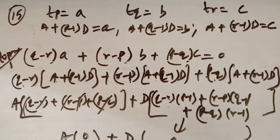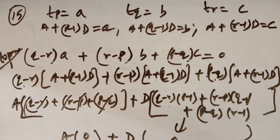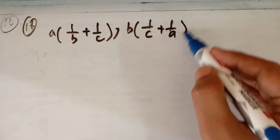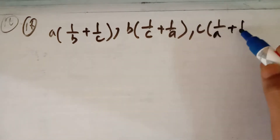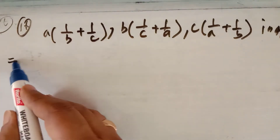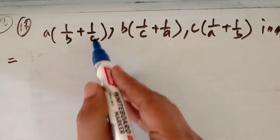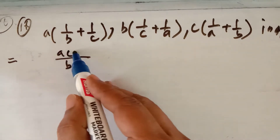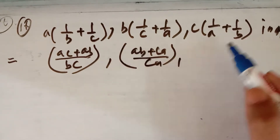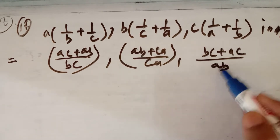Now in question number 16, some terms are given in AP and you have to prove that a, b, c are in AP. It is given that a(1/b + 1/c), b(1/c + 1/a), c(1/a + 1/b) are in AP. Simplifying by taking LCM: it becomes a(c+b)/bc, then b(a+c)/ca, and then c(b+a)/ab, all in AP.